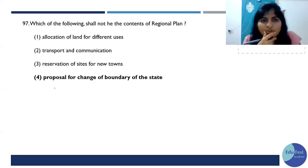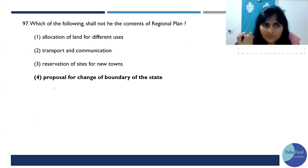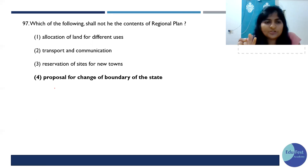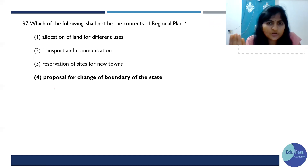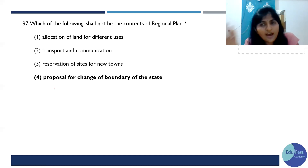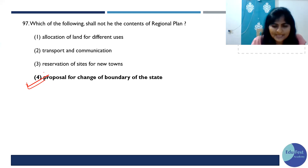Which of the following shall NOT be the content of the Regional Plan (RP)? Allocation of land for different uses is in the RP. Transport and communication plays an important role. Reservation of new towns is also included. However, a proposal for the change of boundary of a state — a state's boundary cannot be changed by the RP. So yes, this should NOT be content of the RP.